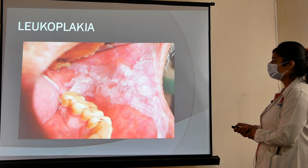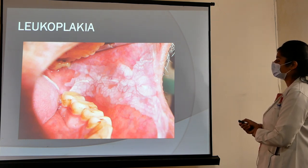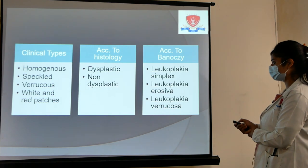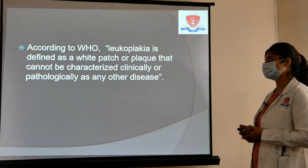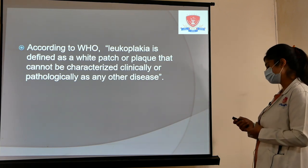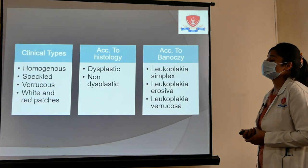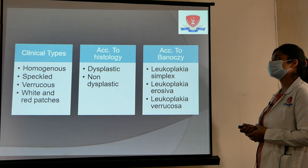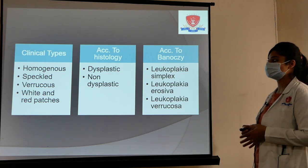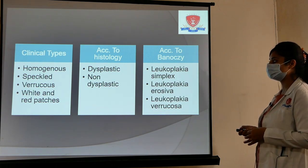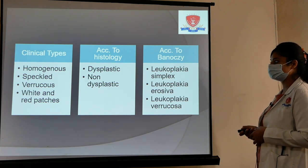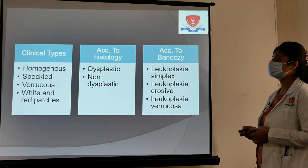Leukoplakia is a whitish homogenous patch extending from the commissure area to the retromolar area. According to WHO, leukoplakia is defined as a white patch or plaque that cannot be characterized clinically or pathologically as any other disease. Clinical subtypes include homogenous (totally whitish), speckled (white with red specks), and verrucous forms. Histologically, it can be dysplastic or non-dysplastic. According to Banoczy, it is classified as leukoplakia simplex, leukoplakia erosiva, and leukoplakia verrucosa.